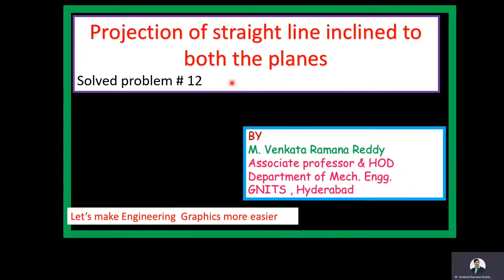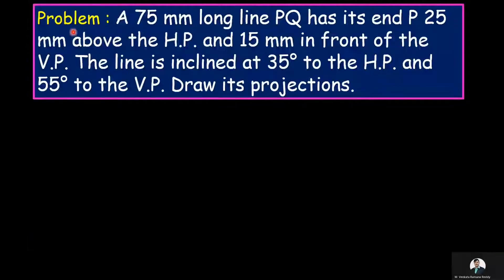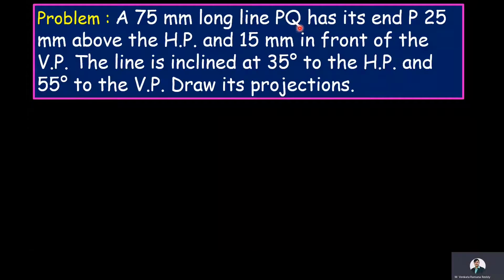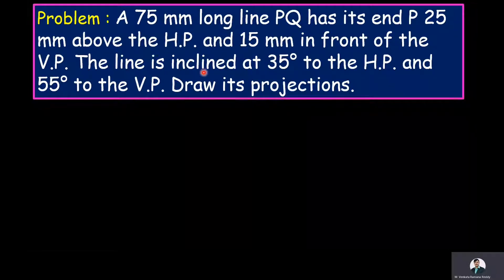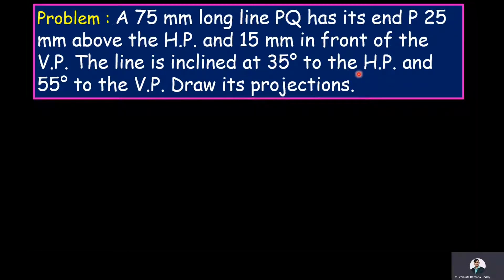The given problem is: a 75mm long line PQ has its end P, 25mm above the HP and 15mm in front of the VP. The line is inclined at 35 degrees to the HP and 55 degrees to the VP. Draw its projections. Now we will extract the data from the problem.